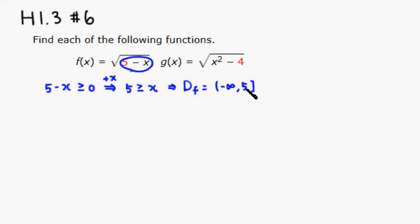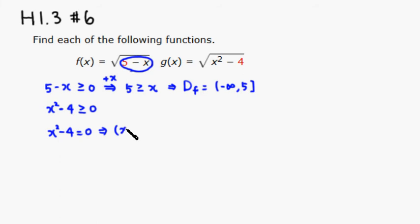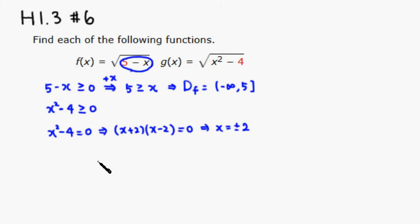Now for g, same deal — we have x squared minus 4, and we want this to be greater than or equal to 0. To do this, we'll use a number line. First, solve the equality: x squared minus 4 equals 0. Factor it out — x plus 2 times x minus 2 equals 0. So when x equals negative 2 and positive 2, the expression is 0. Draw a number line and put tick marks at negative 2 and positive 2.